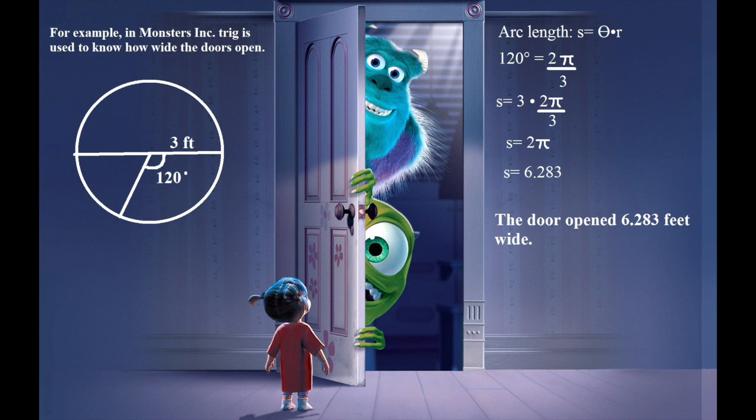The formula that is being used is arc length equals radius times radians. But before substituting, the degree must be converted to radians. 120 degrees then equals 2π/3. Now we can start substituting. So the arc length equals 3, which is the radius, times the radians, which is 2π/3. You multiply and it turns out to be that the arc length equals 2π. So putting that into the calculator, the arc length should equal 6.283. That is how wide the door opens.